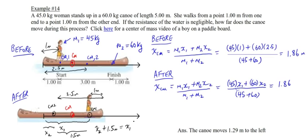So once again, the center of mass of the canoe is at the dead center of it, which is 2.5 meters from the edge. She's 1.5 meters from the edge.